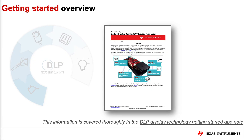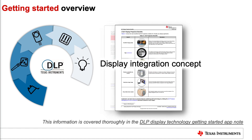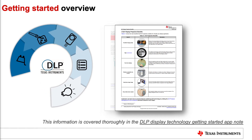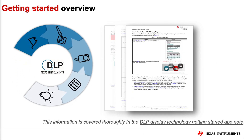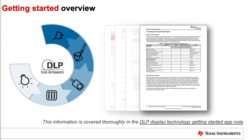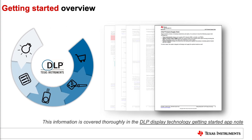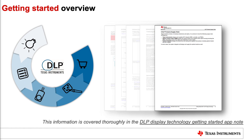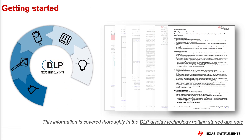The getting started steps include: display integration concept, quick assessment of DLP technology and chipset evaluation, optical module specification and selection, system integration of the application, and the design and manufacturing plan for your end product.